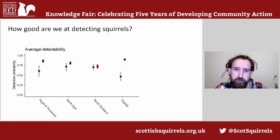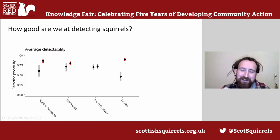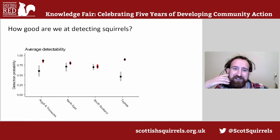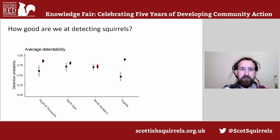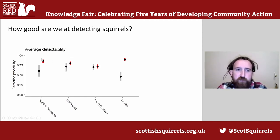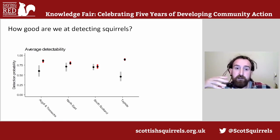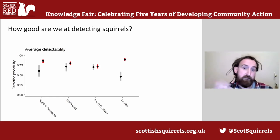How good are we at detecting squirrels? I like this figure because it instils a healthy amount of competition between regions: Argyll and Trossachs, northeast, southern Scotland, and Tayside, showing relative detection probabilities for each squirrel species. This probably isn't just an indication of how good surveyors are — it's more likely to do with the environment and the density of squirrel populations in these areas. It's interesting that detection probabilities change between regions, meaning that comparing naive occupancy trajectories between regions may not be a robust approach. It indicates we really do need to account for varying detection probability.